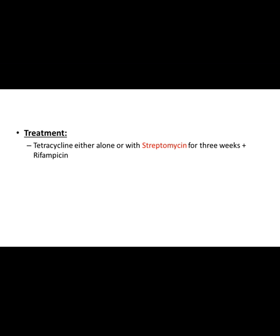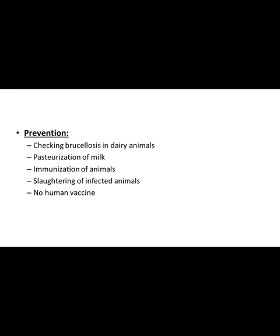Treatment: tetracycline is the main treatment, either alone or with streptomycin for three weeks, and rifampicin can also be used. The treatment course must be longer than the usual antibiotic course. Prevention includes screening for brucellosis in dairy animals, pasteurization of milk (very important), immunization of animals, slaughtering of infected animals. There is no human vaccine available.